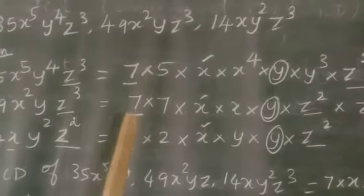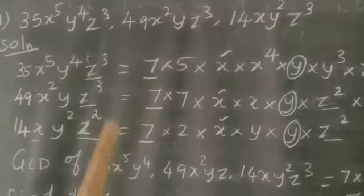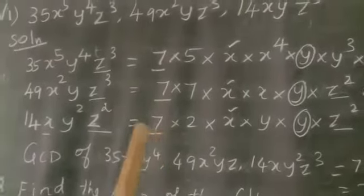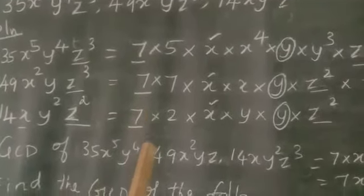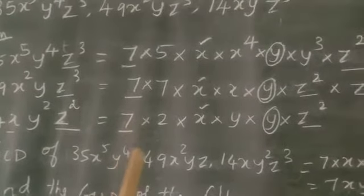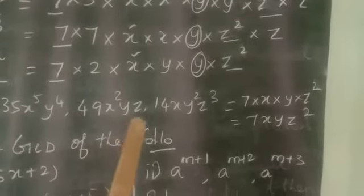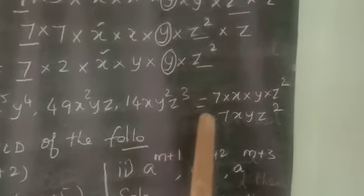Now see the common factors — find the common numbers and factors. First we find out the GCD of the coefficients of the given terms. The common number is 7, so the GCD of the coefficients is 7. The x term — x is common, the y term — y is common, and the z term — z² is common. So the GCD of 35x⁵y⁴z³, 49x²yz³, and 14xy²z³ equals 7 × x × y × z², which is 7xyz².